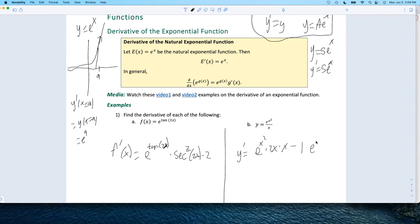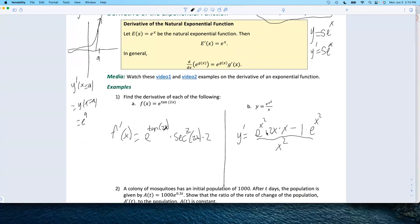Leave the numerator alone, all over the bottom squared. So that was quotient rule and chain rule and the derivative of the natural exponential function, all built into one.